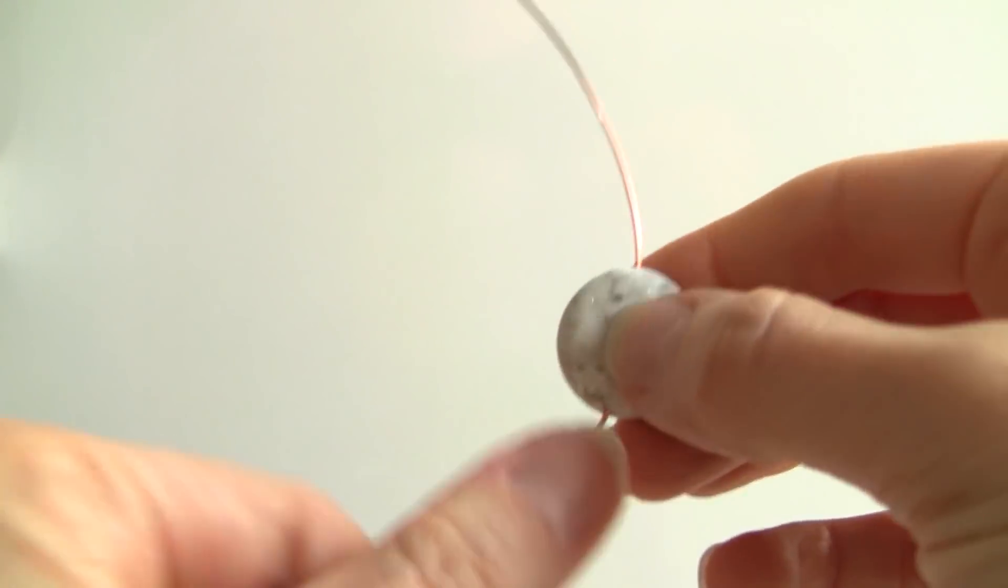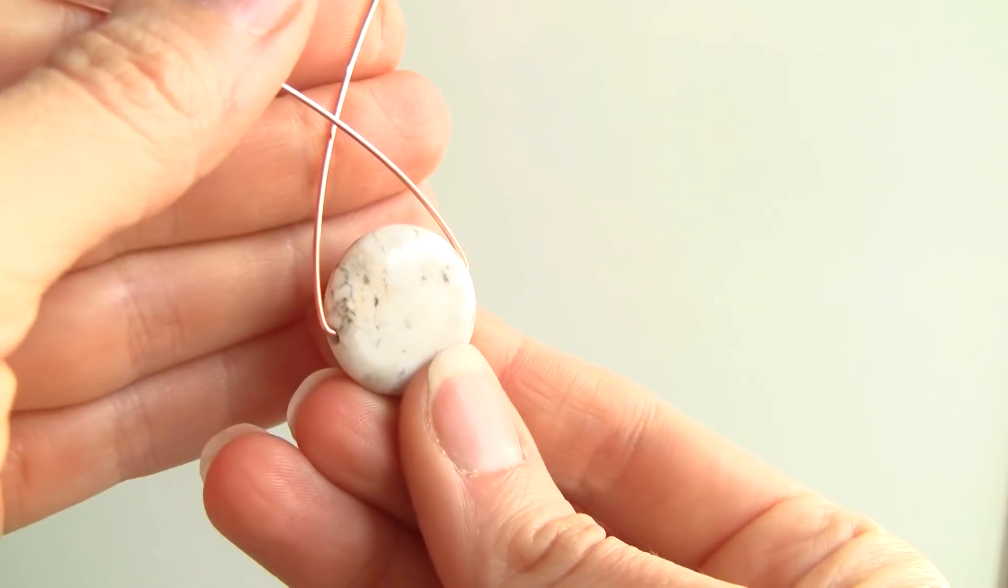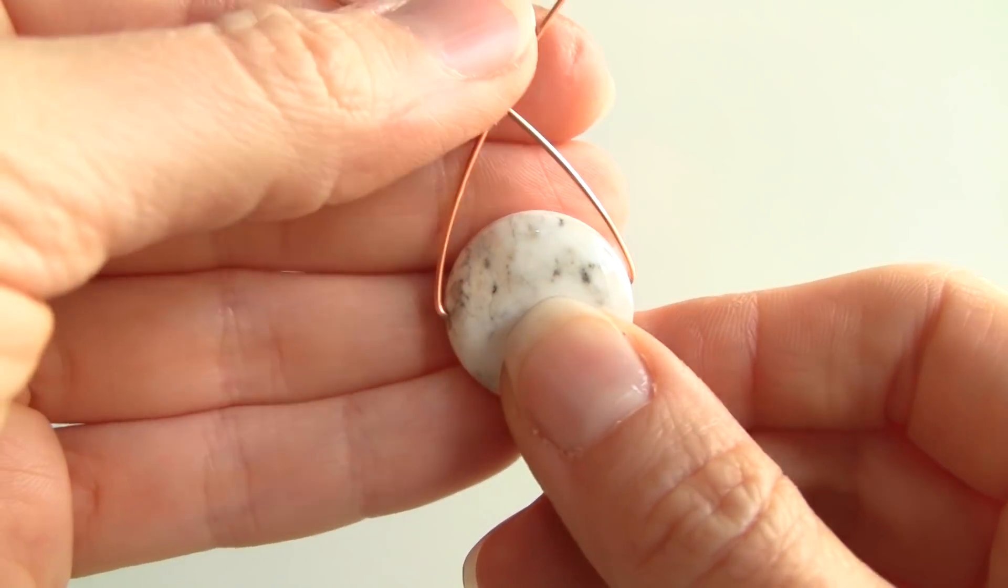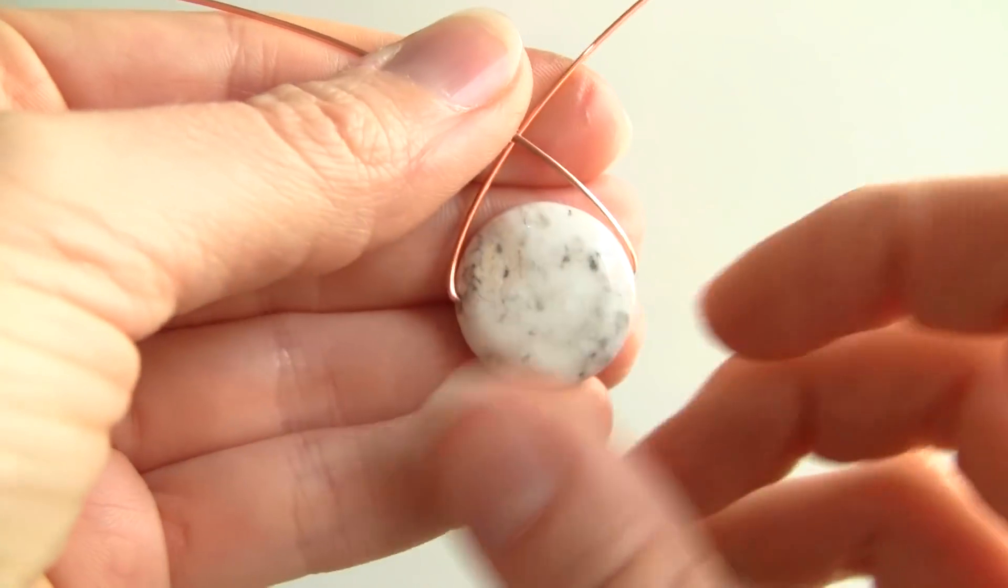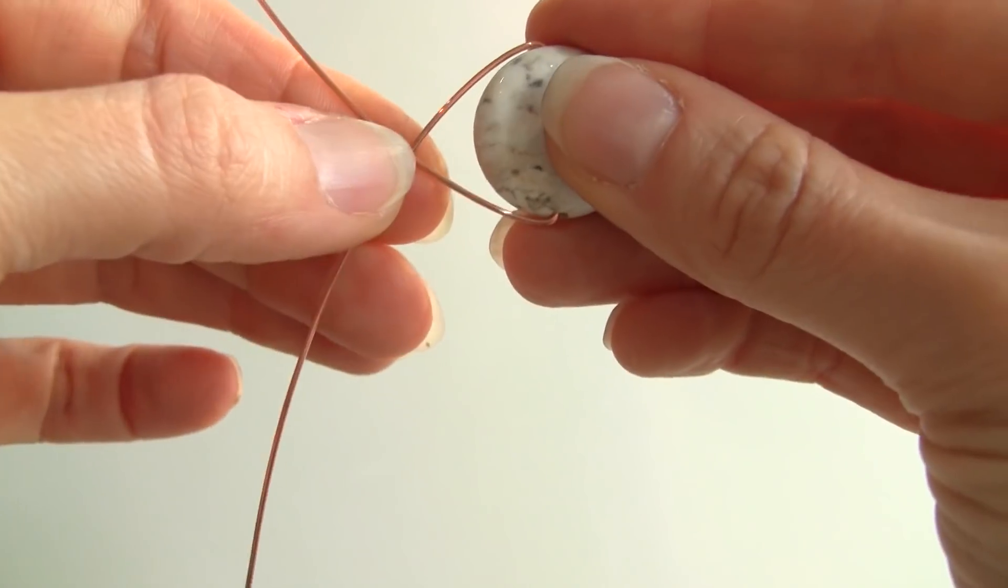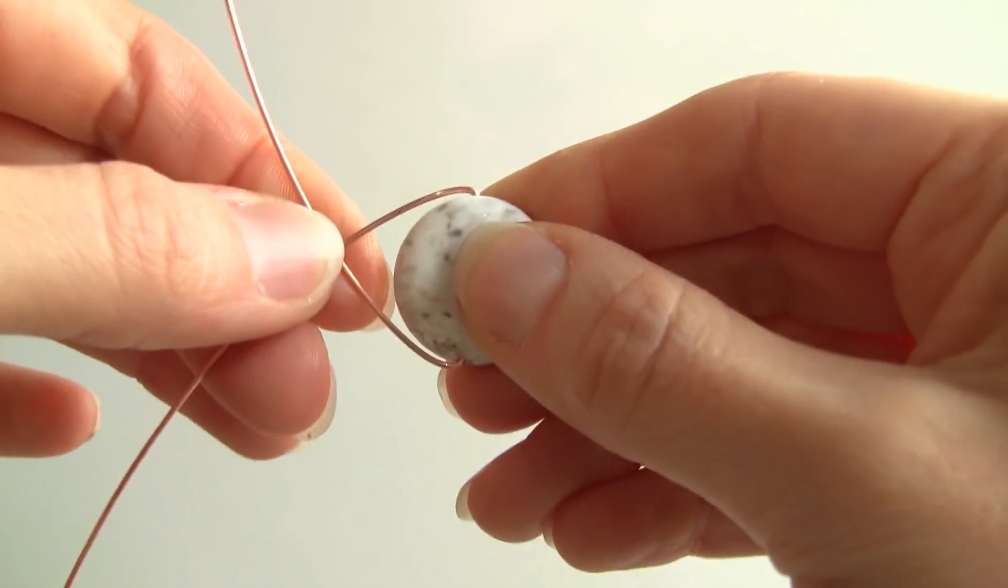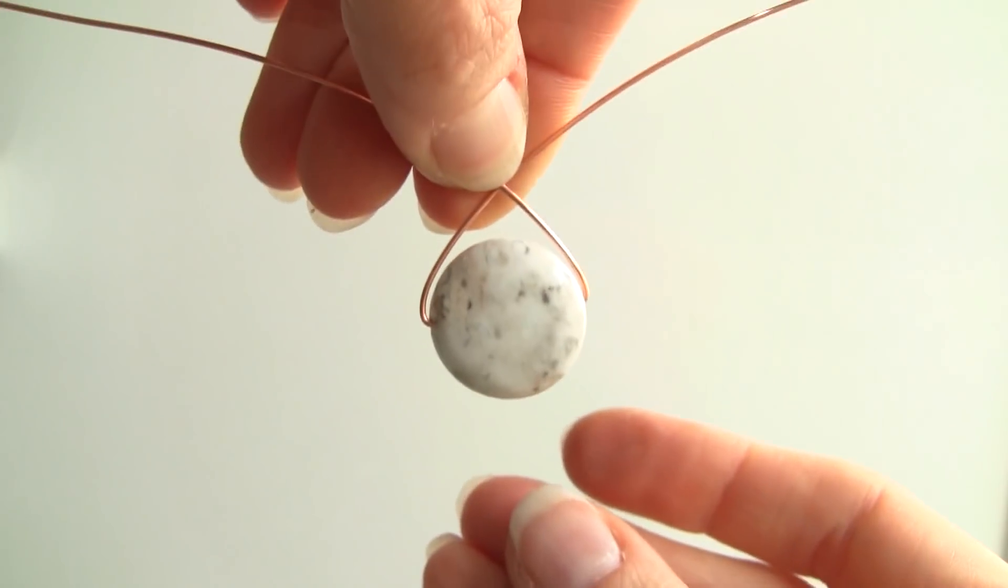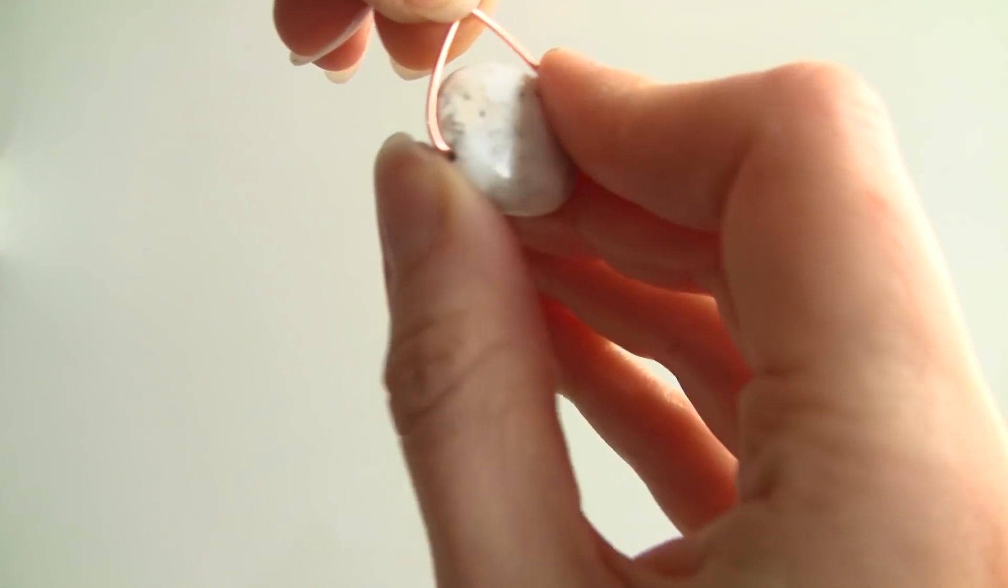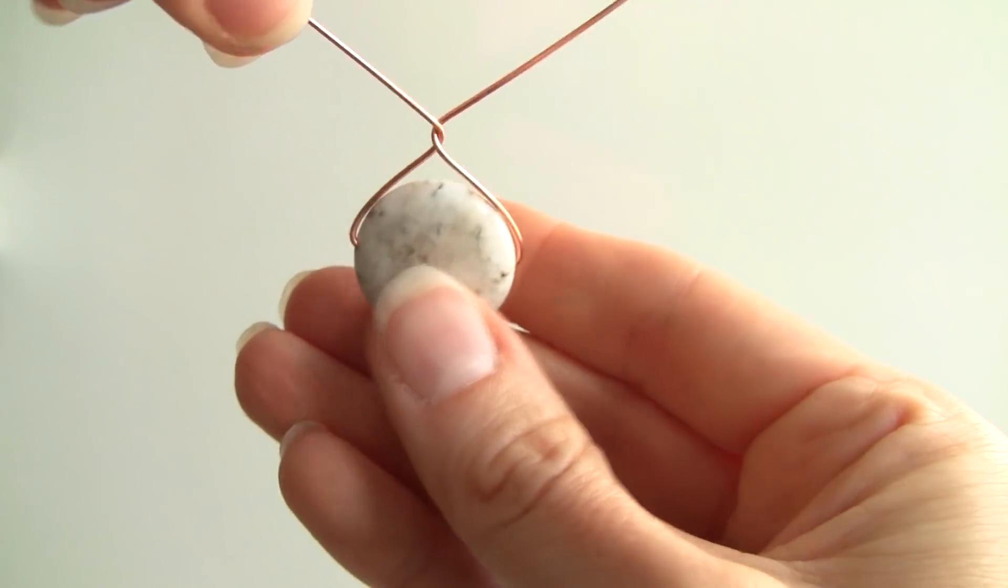So once your bead is in the middle, go ahead and bend the ends like this, the edges I mean, up and then here at the top, this little X that is formed, make sure that it's nice and centered, not like to the side or something. And once you have it there nice and centered, just go ahead and twist like this.